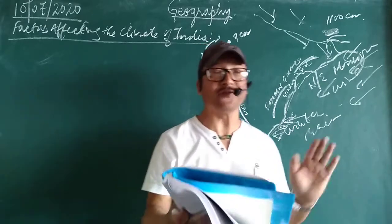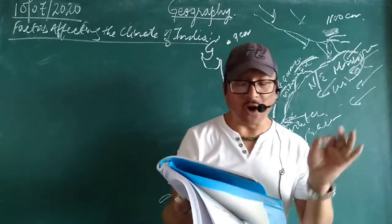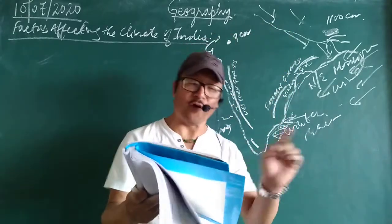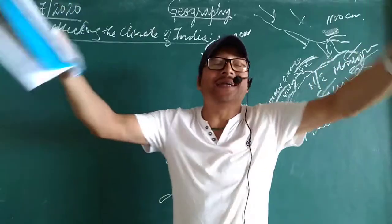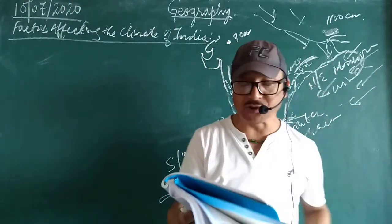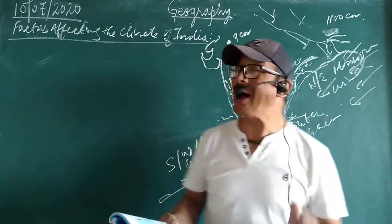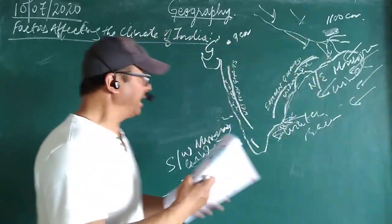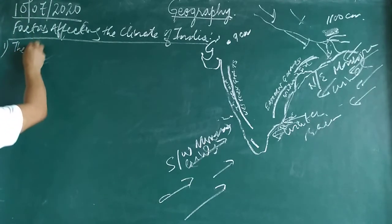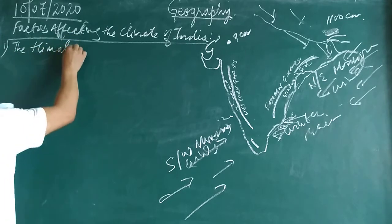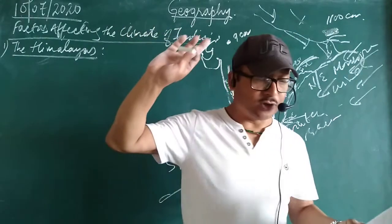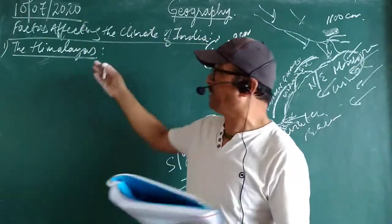Climate refers to a generalized and composite picture of the average weather conditions spread over a long period for a given large area. Now let's see what are the factors which influence the climate of India. Number one factor which influences the climate of India is the Himalayas. I already explained this in previous classes — how the Himalayas affect the climate of India.